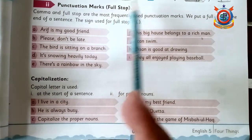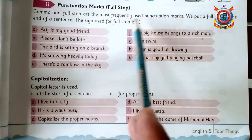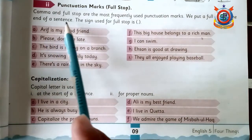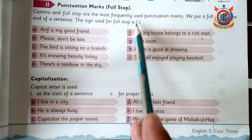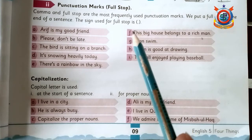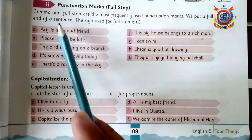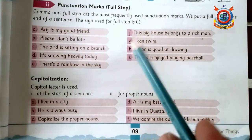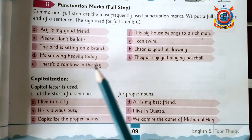Full stop: comma and full stop are the most frequently used punctuation marks. We put a full stop at the end of a sentence. The sign used for full stop is this dot. Full stop ہم استعمال کرتے ہیں sentence کے last میں، اور اس کا sign یہ dot ہے۔